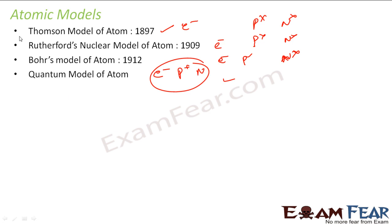So we'll discuss all these models one by one. And please note, the first three models are incorrect. This is the only correct model. We studied this because it's the history of chemistry. You want to know how we got to the quantum atomic model. It's not that simple to get the quantum atomic model in one shot.